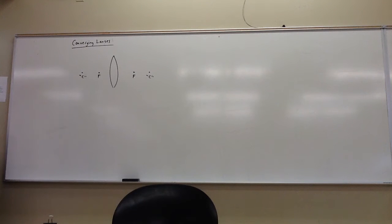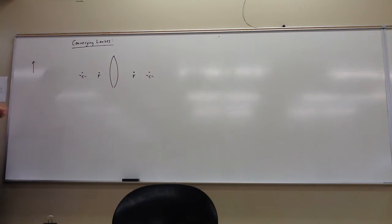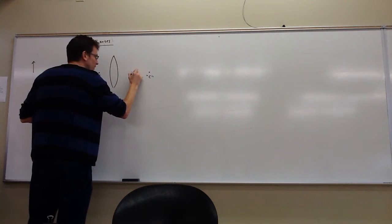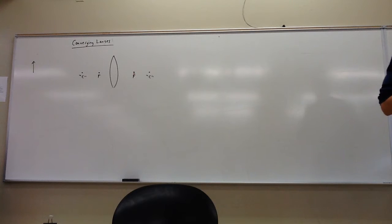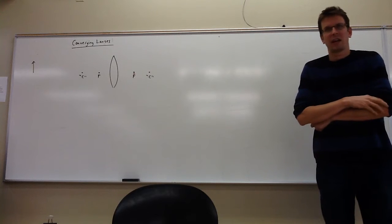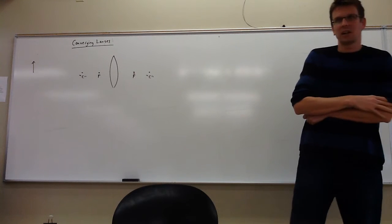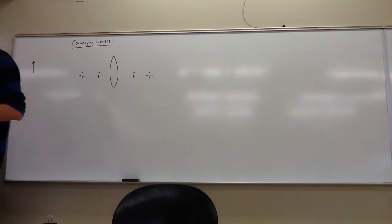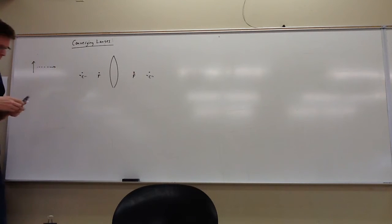I'll draw the object in black and the image in red. So the object is over here, very far away. The significance of the focus is that that's where the lens channels the light from that object into an image. When the object is very far away, the image is at F—it's a real, inverted image, and it's very small. As I move the object in, the image moves out and starts to grow.